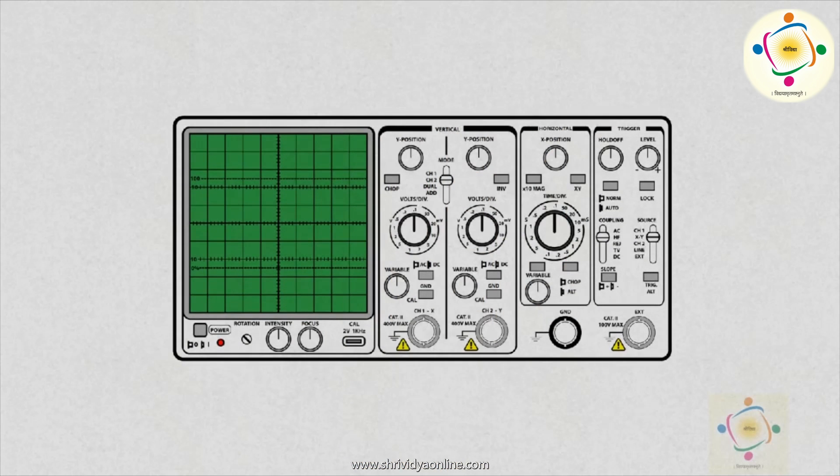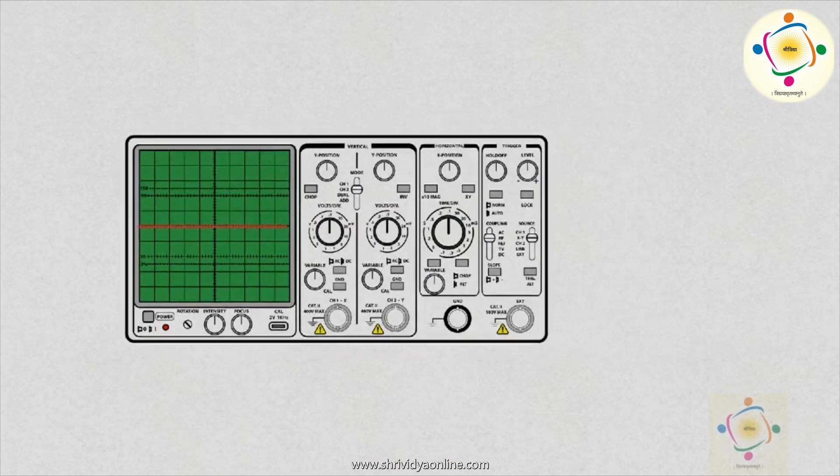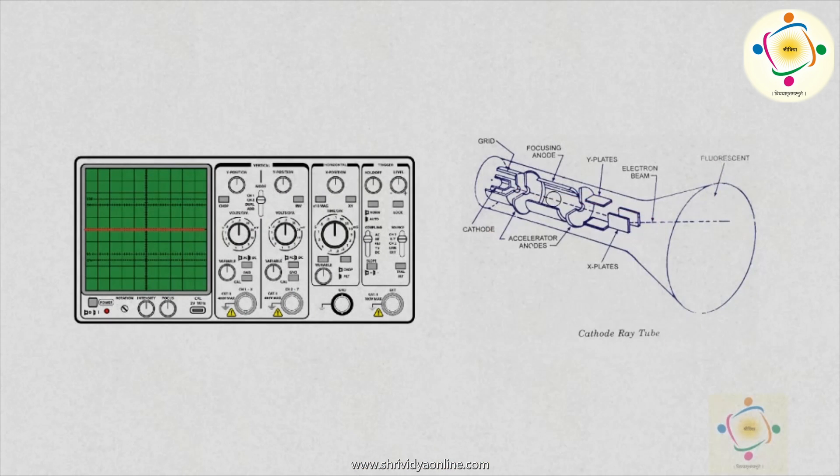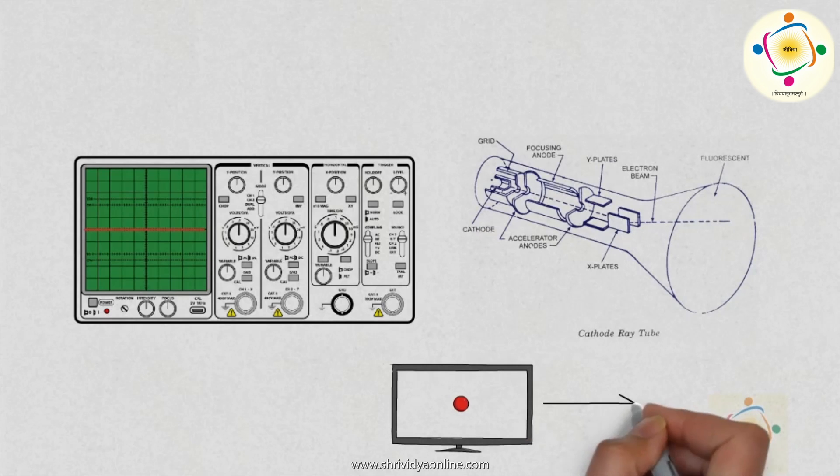When we switch on the CRO, you will find a horizontal line on screen. Actually, the electron gun produces only a bright spot on the screen, so the question arises how this spot becomes a line?